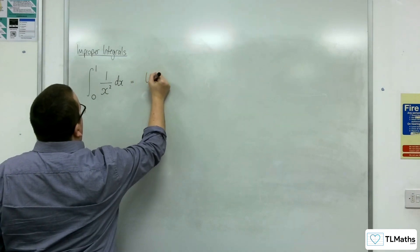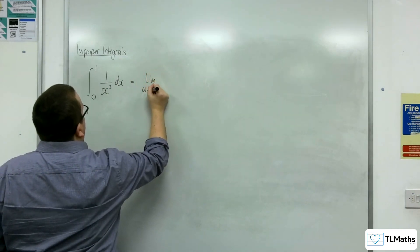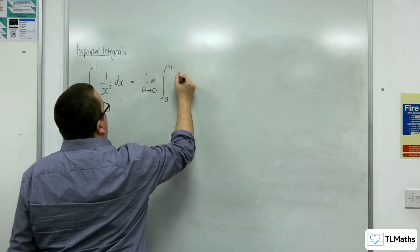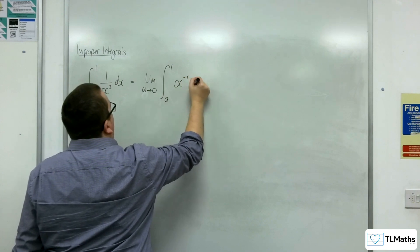So this is the limit as a tends to 0 of the integral between a and 1 of 1 over x squared, so x to the minus 2 dx.